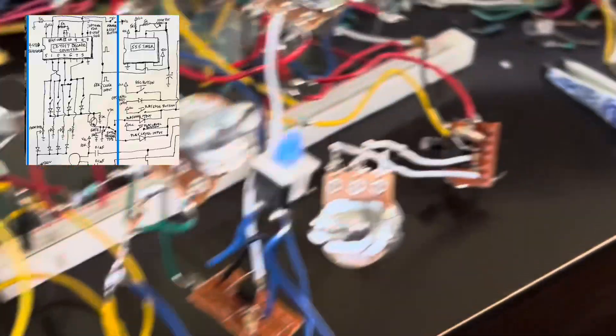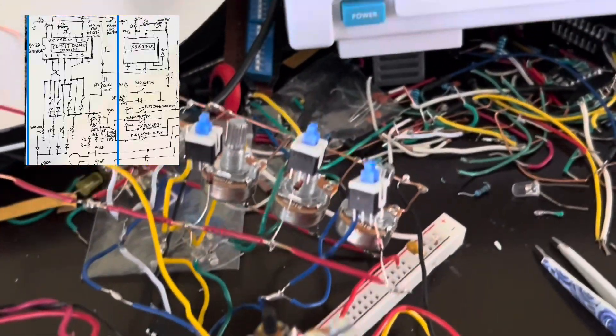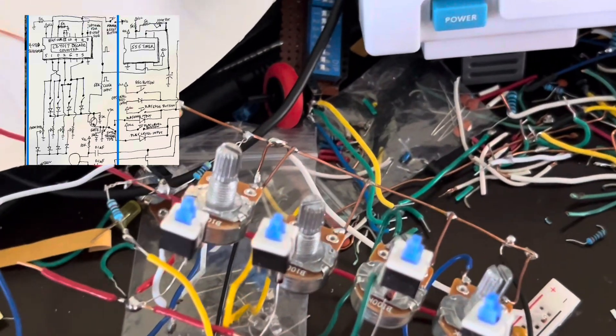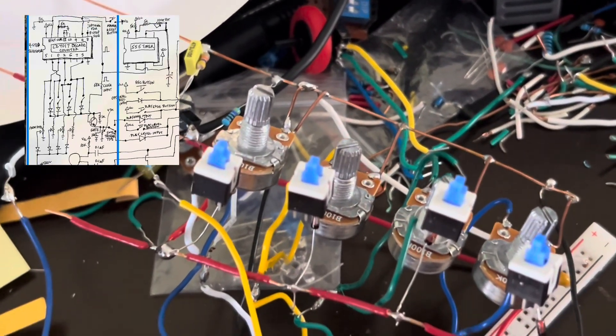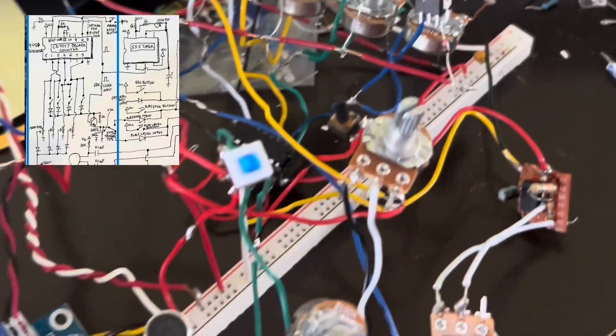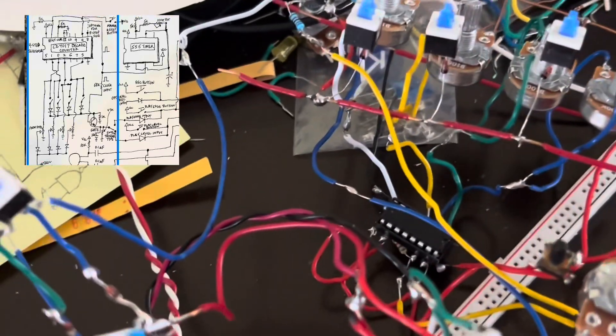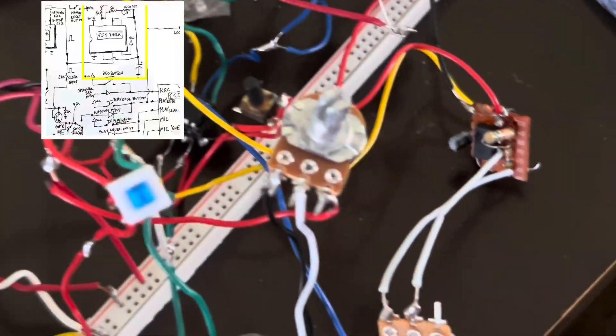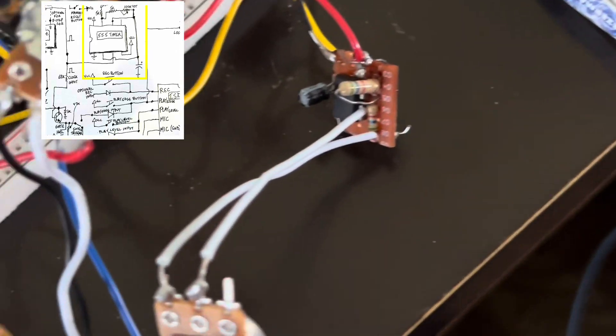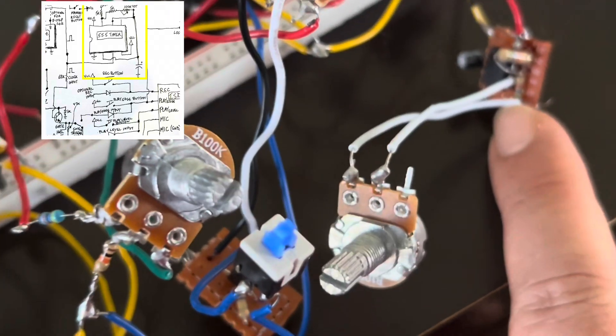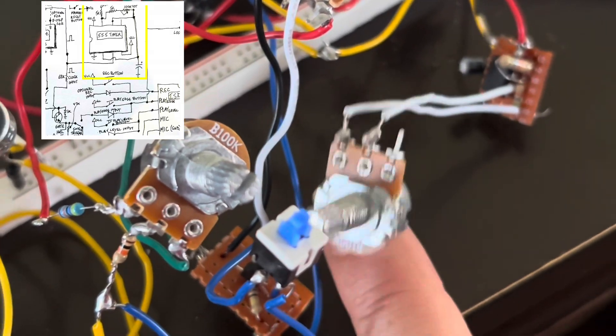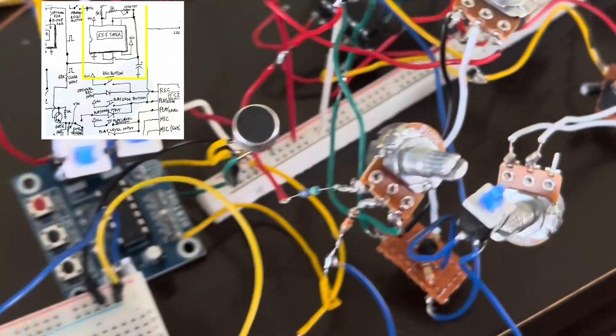I have the control voltage based on the little sequencer I built here with the four potentiometers, the four step sequencer. I can make it eight step. It's based on the CD4017. The clock is run by this little 555 timer, which is, this is the tempo potentiometer for it.